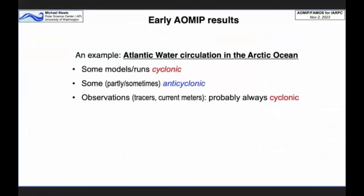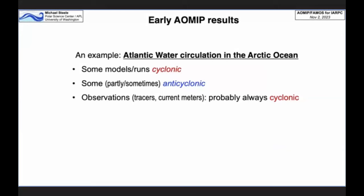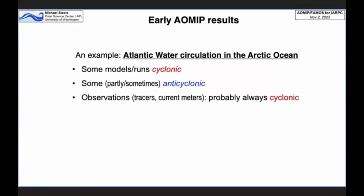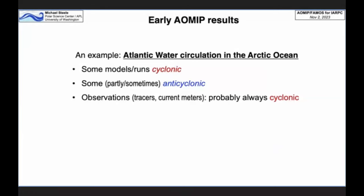One of my favorite examples from those early years was Atlantic water circulation in the Arctic Ocean. We found that some models were getting cyclonic boundary-trapped Atlantic water circulation at depth running around the entire Arctic Ocean — the Eurasian Basin and the Amerasian Basin. However, other models were getting anti-cyclonic Atlantic water circulation. The observations at that time — limited geochemical tracers and current meter databases — indicated that cyclonic was probably the real answer.